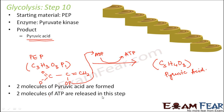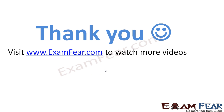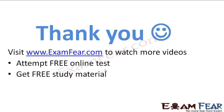That concludes the stepwise discussion of glycolysis. The initial starting material was glucose and the final product is pyruvic acid. Across all 10 steps, many intermediate compounds were formed; in some steps ATP was utilized, in some ATP was produced, and in some NADH was formed — meaning energy was released across multiple steps. Please visit examfear.com for more videos, free online tests, study material, and tutors.